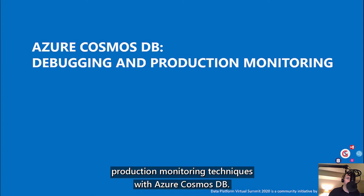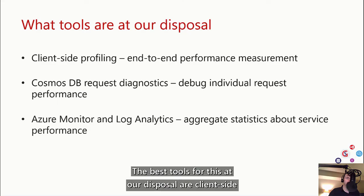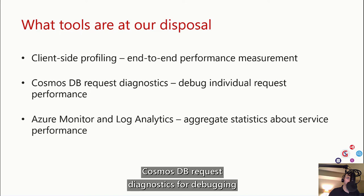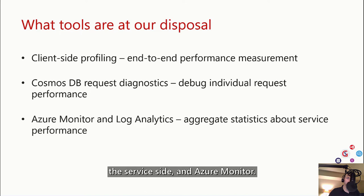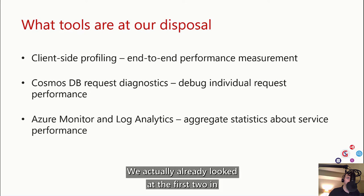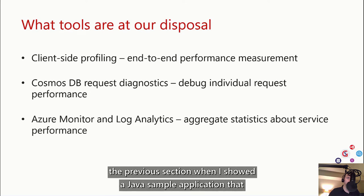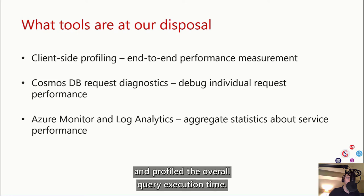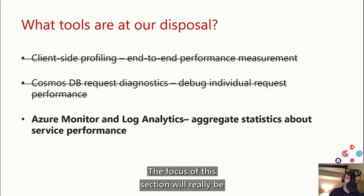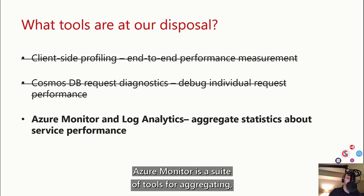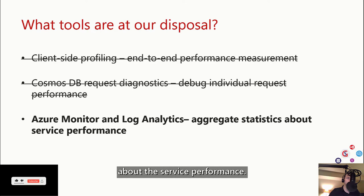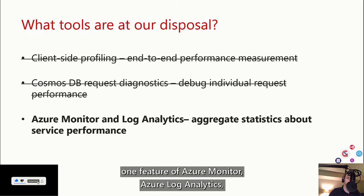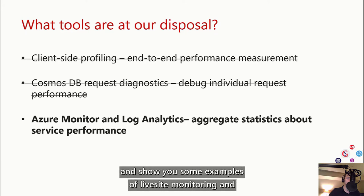In this section, I'm going to dig deeper on debugging and production monitoring techniques with Azure Cosmos DB. The best tools at our disposal are client-side profiling for end-to-end performance measurement, Cosmos DB request diagnostics for debugging individual request performance on the service side, and Azure Monitor. We already looked at the first two in the previous section. The focus of this section will really be on what you can do with Azure Monitor — a suite of tools for aggregating, visualizing, and querying statistics about service performance. I'm going to drill down to focus primarily on Azure Log Analytics, and show you some examples of live site monitoring and debugging using log data queries.